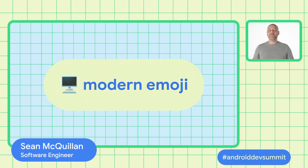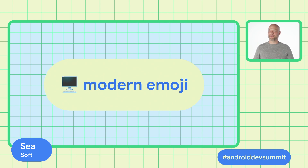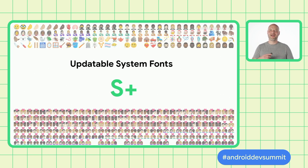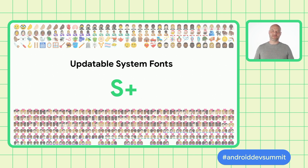Next, Sean will walk you through updatable system fonts and changes to EmojiCompat. Hi, I'm Sean from the Android text team, and I'm here to share a bit about Emoji in your application. Starting in Android S, we introduced updatable system fonts, and the first font we'll update is the Emoji font. This is really good news as a developer, because it means you never have to think about Emoji again on S-plus devices — it's just taken care of for you.